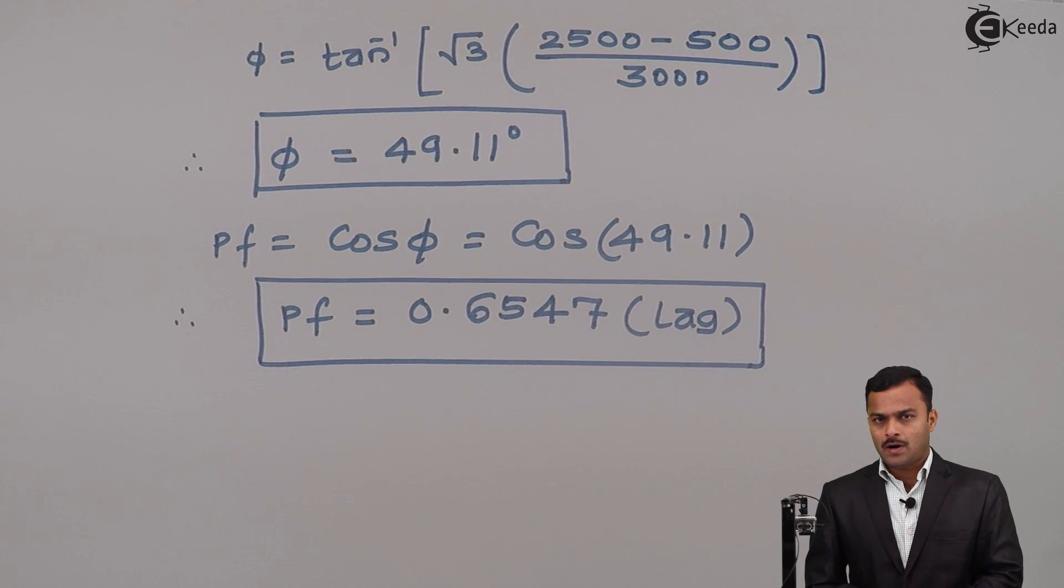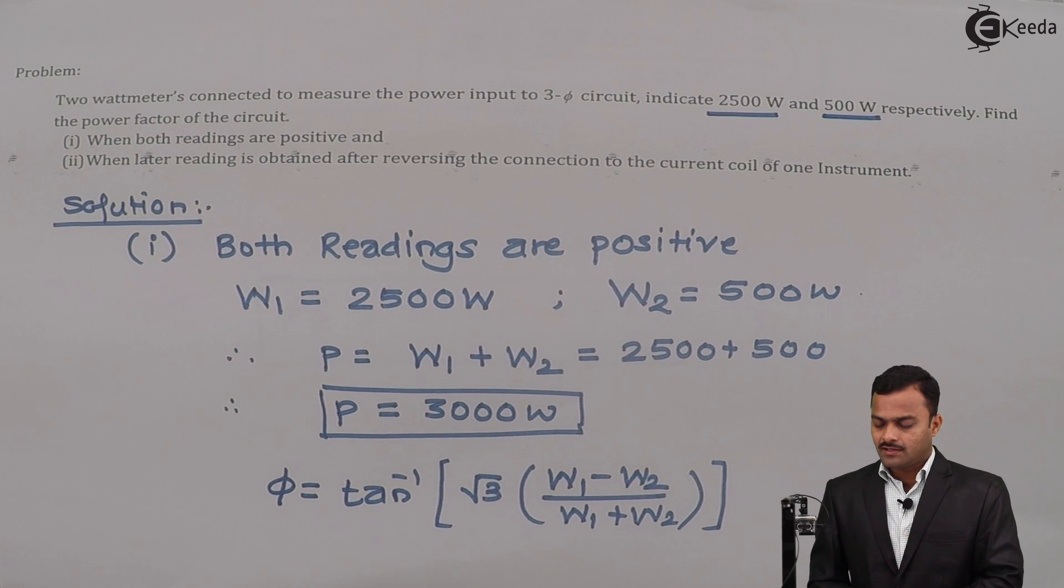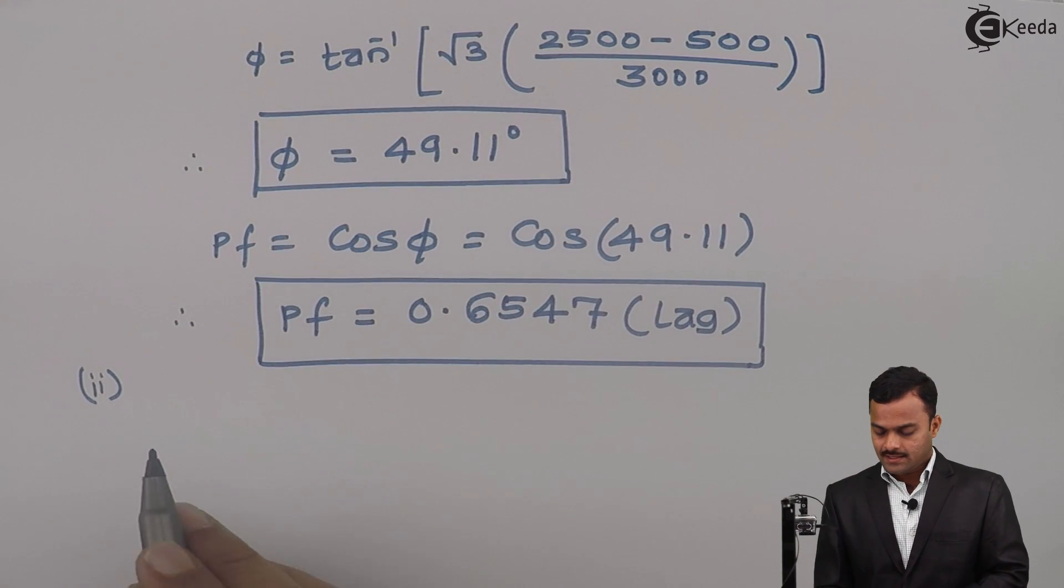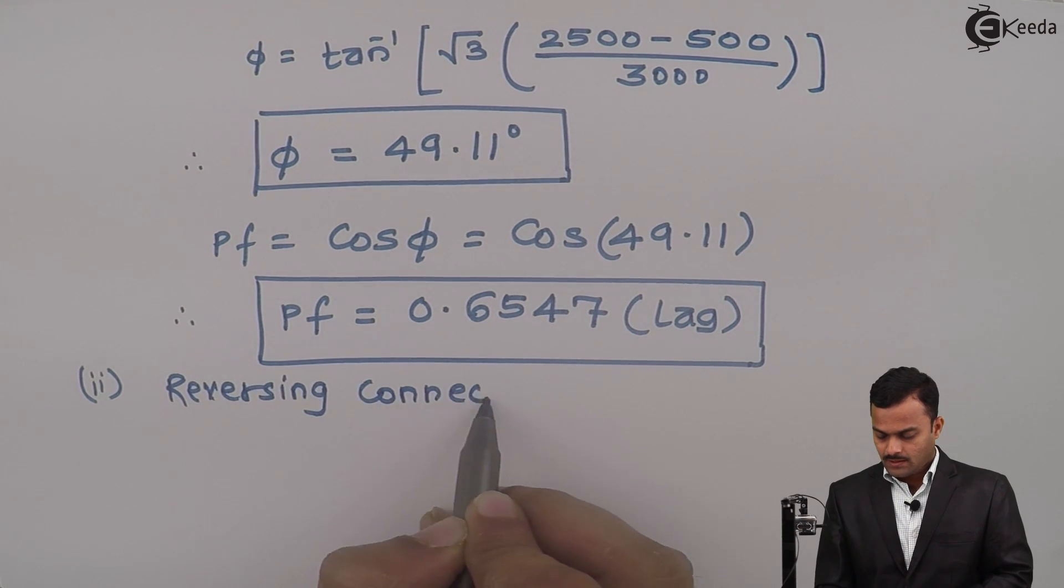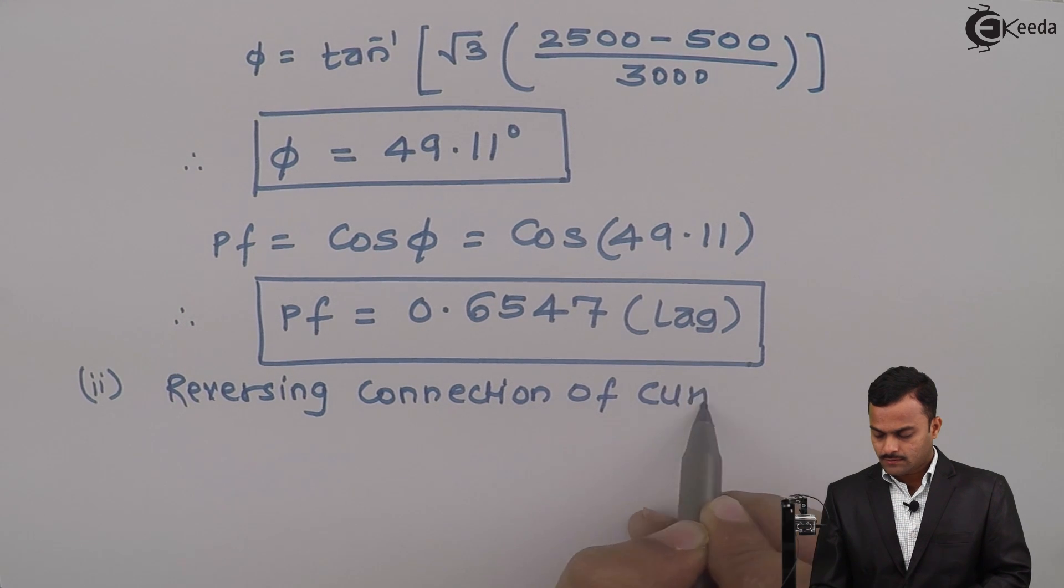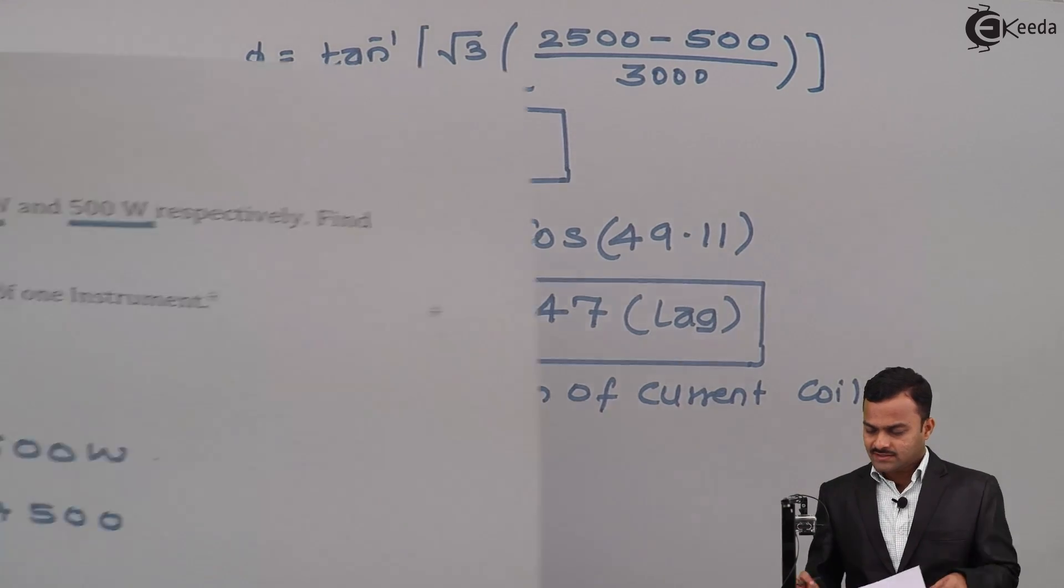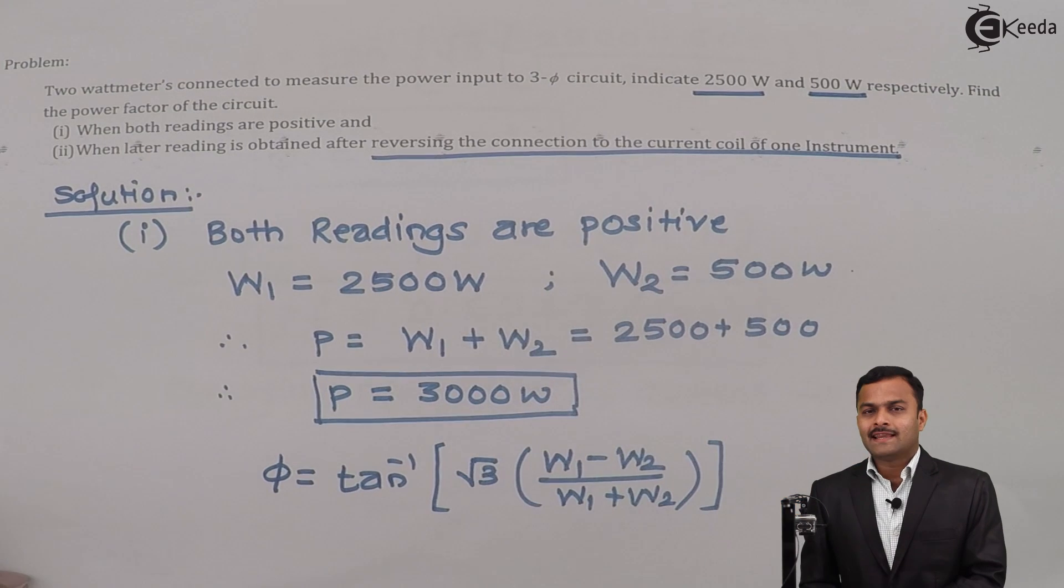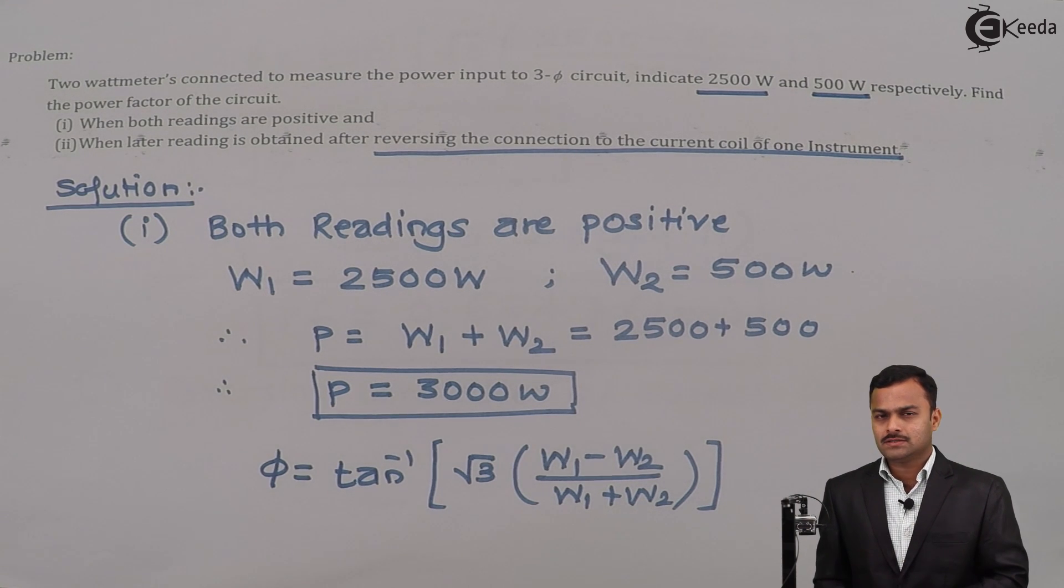This is the first part of the problem. Let's go to the second part. So what they are saying for the second part: latter reading is obtained after reversing the connection to the current coil of one instrument. So what I will consider is reversing connection of current coil of one of the instruments. What does that mean? Whenever such condition appears, that means whatever reading you got of one of the instruments, whenever you take that reading for calculation purpose, you need to take a negative sign along with the value.